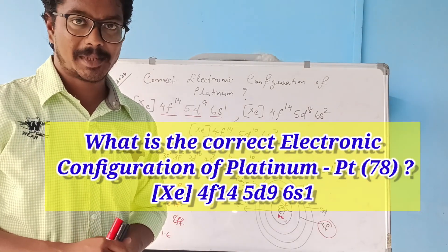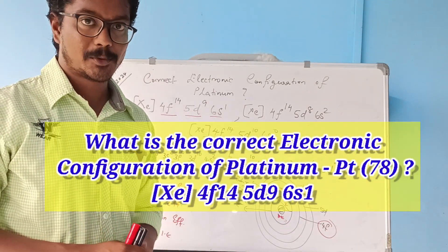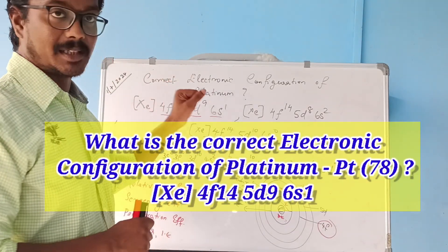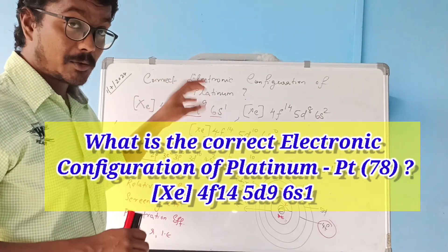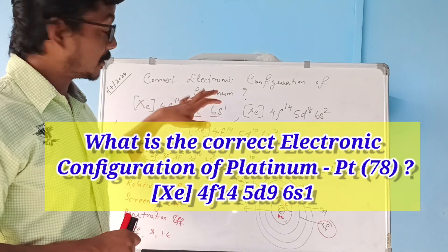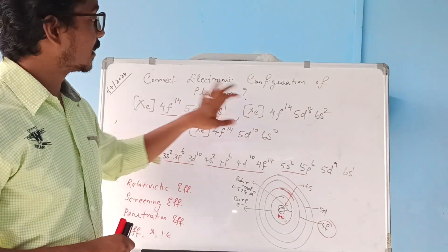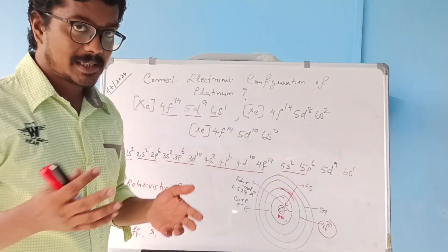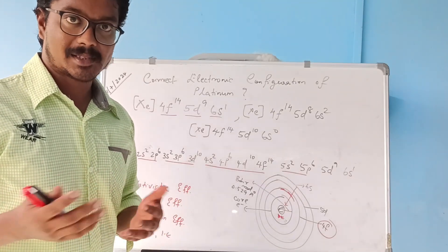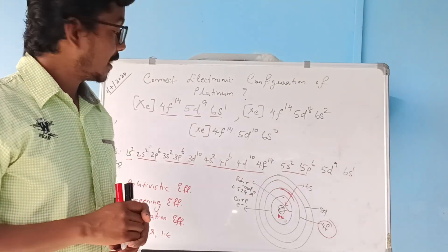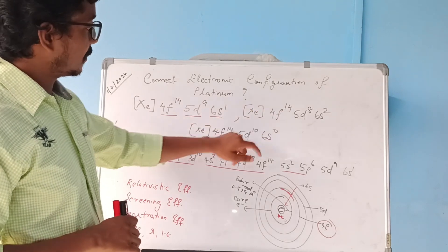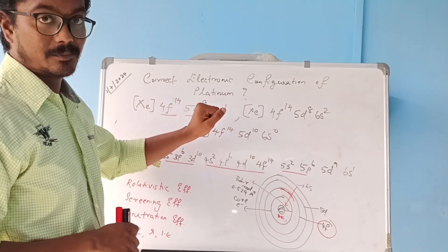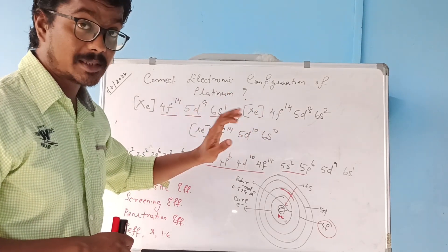My dear students, welcome to my class. Today I am going to discuss with you a question — we are going to find out the correct electronic configuration of platinum, whose atomic number is 78.